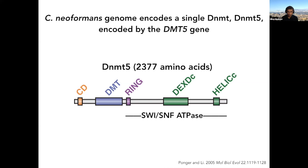The rest of the protein includes an N-terminal chromodomain, two ring fingers, and a SWI/SNF ATPase that is probably most similar to yeast RAD5.